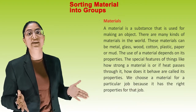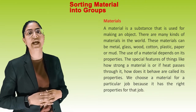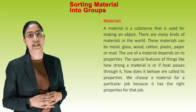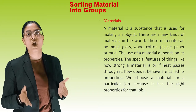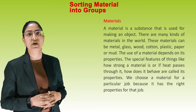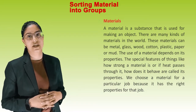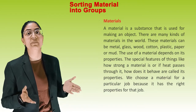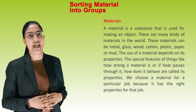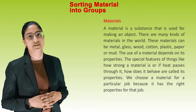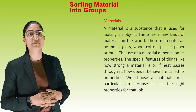A material is a substance that is used for making an object. There are many kinds of materials in the world. These materials can be metals, glass, wood, cotton, plastic, paper, or mud. The use of a material depends on its properties — the special features of things, like how strong a material is or how heat passes through it. We choose a material for a particular job because it has the right property for that job.